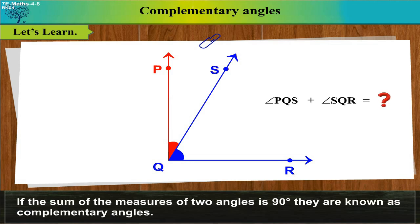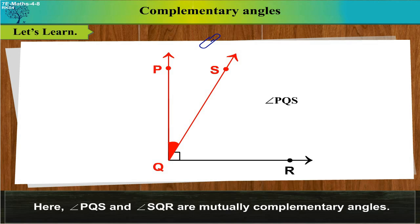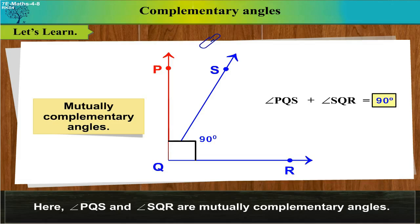If the sum of the measures of two angles is 90 degrees, they are known as complementary angles. Here Angle PQS and Angle SQR are mutually complementary angles.